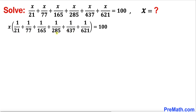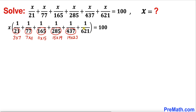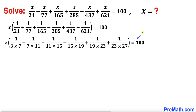We are going to manipulate these fractions very carefully. We can write 21 as 3×7, 77 as 7×11, 165 as 11×15, 285 as 15×19, 437 as 19×23, and finally 621 as 23×27.